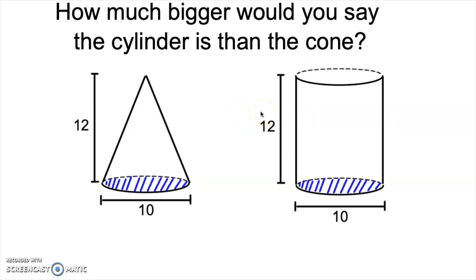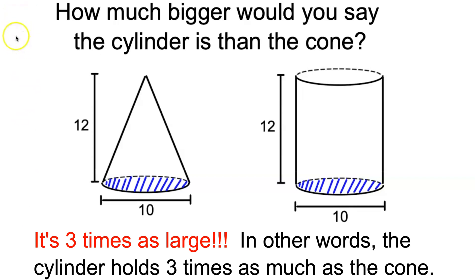Now that we understand pointy versus stackable objects, here's a question: on the left I have a right cylindrical cone, and on the right I have a cylinder. They both have the same diameter — 10 across — and the same height, 12. How much bigger do you think this cylinder is than this cone? In my experience, a lot of people's intuition tells them the cylinder is going to be about twice as big. Surprisingly, it turns out to be three times as large — there is three times the volume in this cylinder than in this cone. In class, I actually have a cylinder and a cone that I fill up with Rice Krispies: you can fill the cone three times and dump all of those Rice Krispies into the cylinder. It's a pretty neat demonstration.